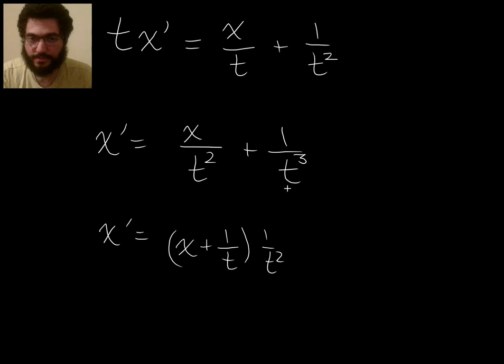But that doesn't help. And in fact, I don't see any algebraic thing I could do that would get me to a situation where I've got something with x alone times something with t alone. And this certainly doesn't do, right? Because this involves t.